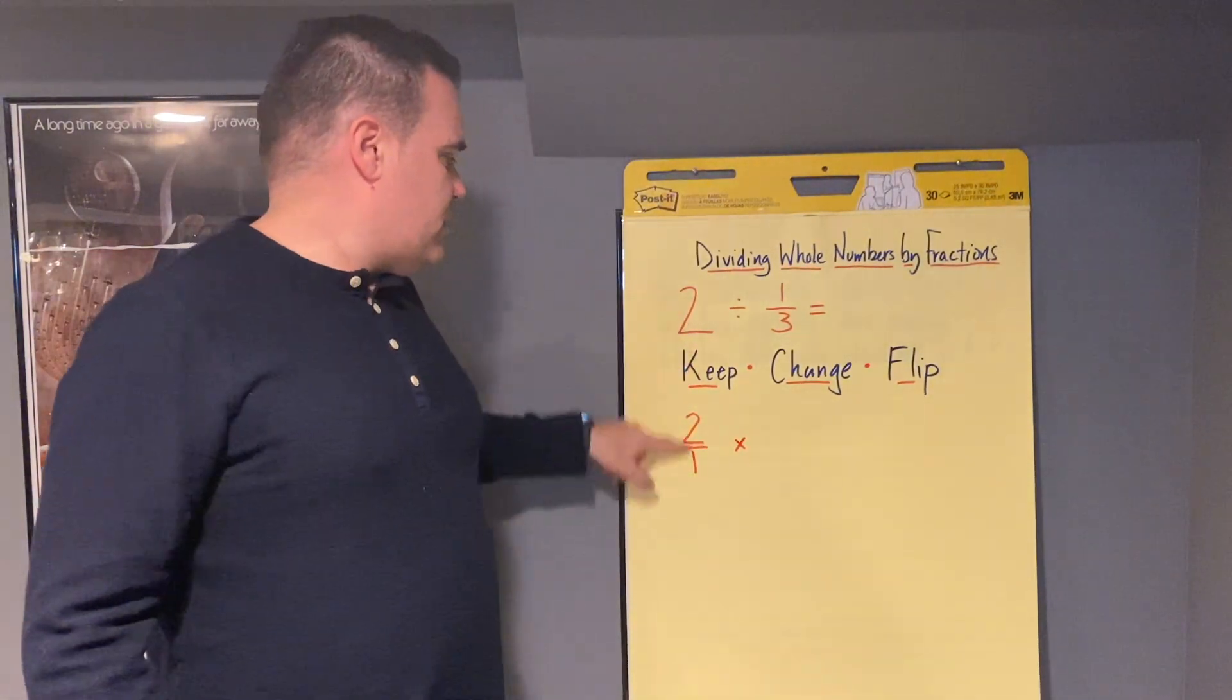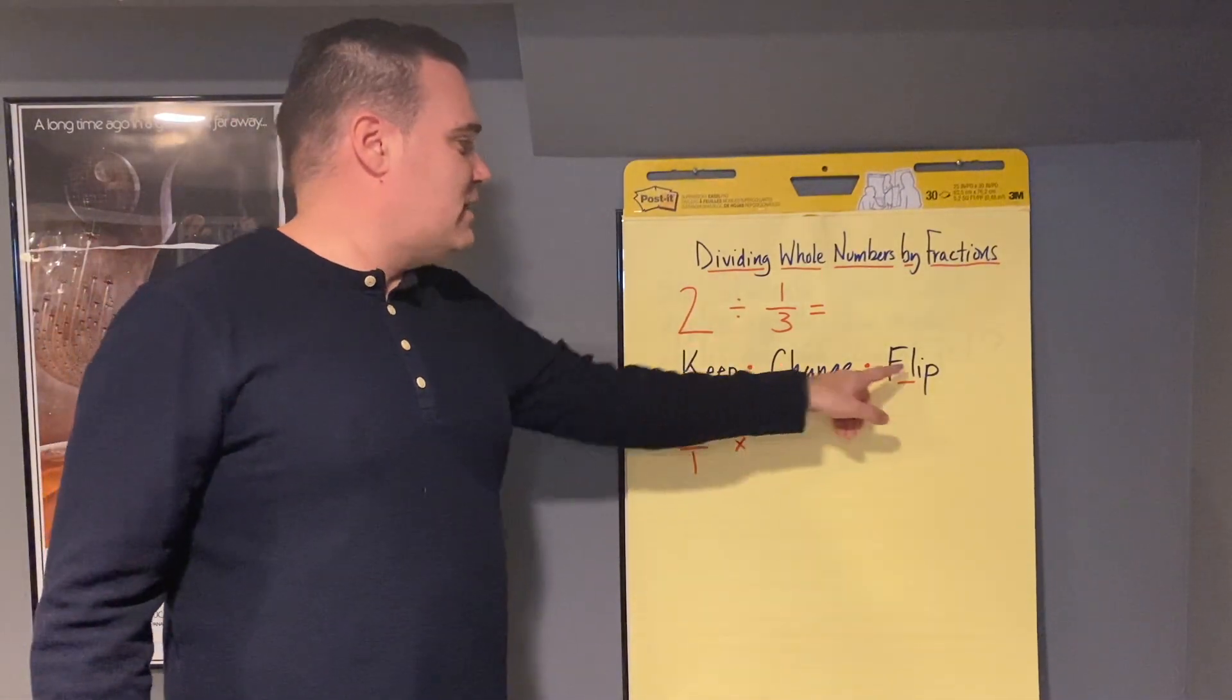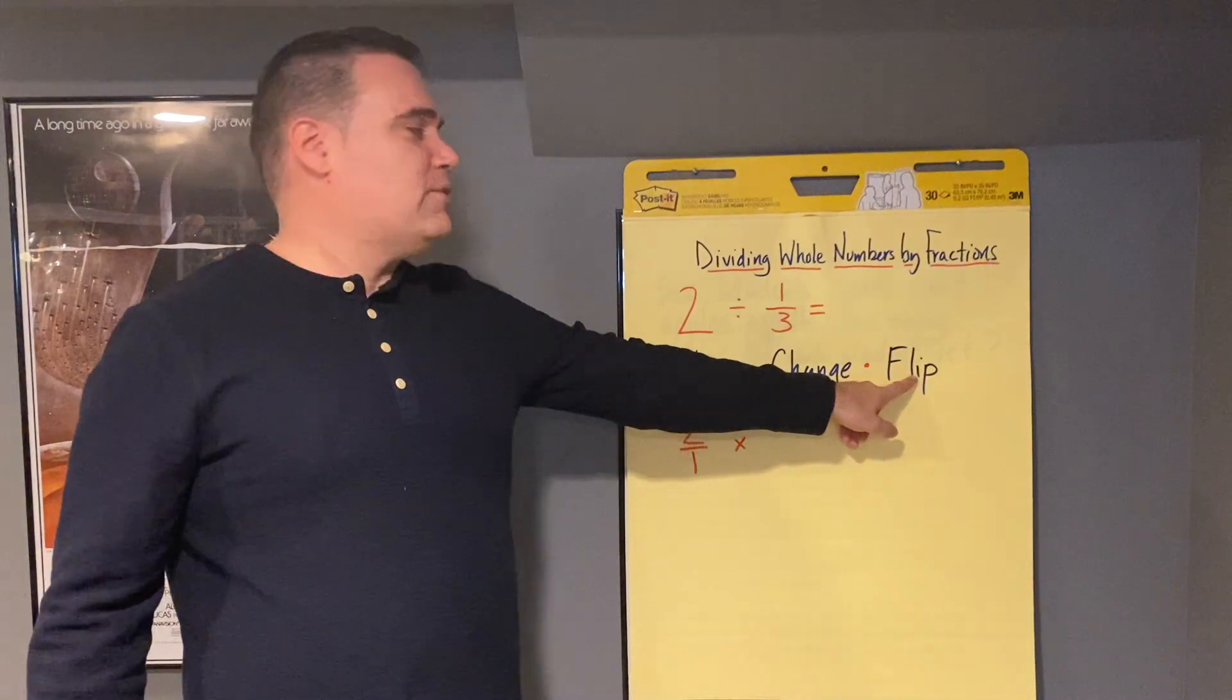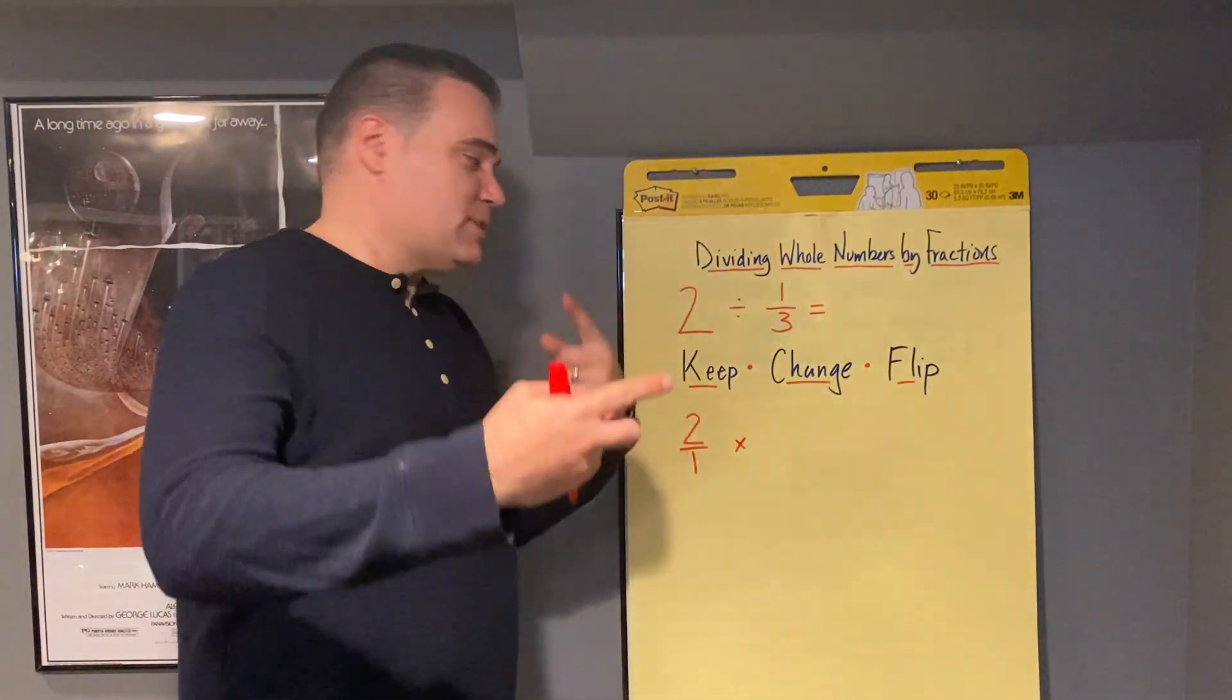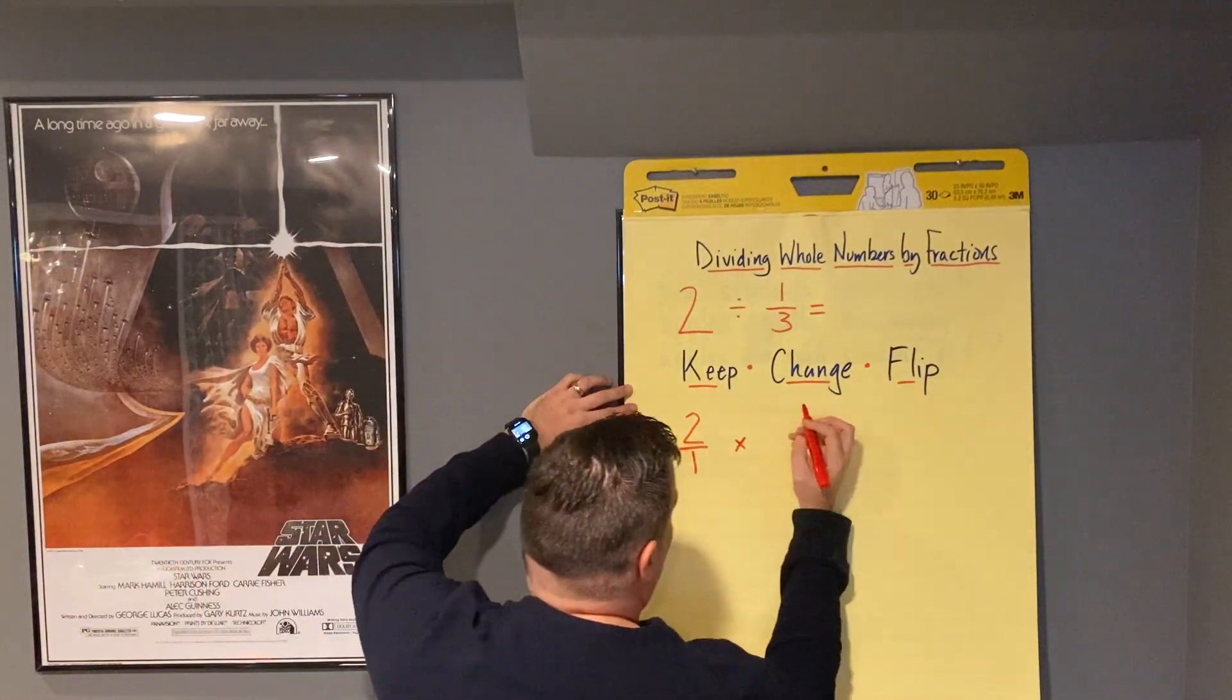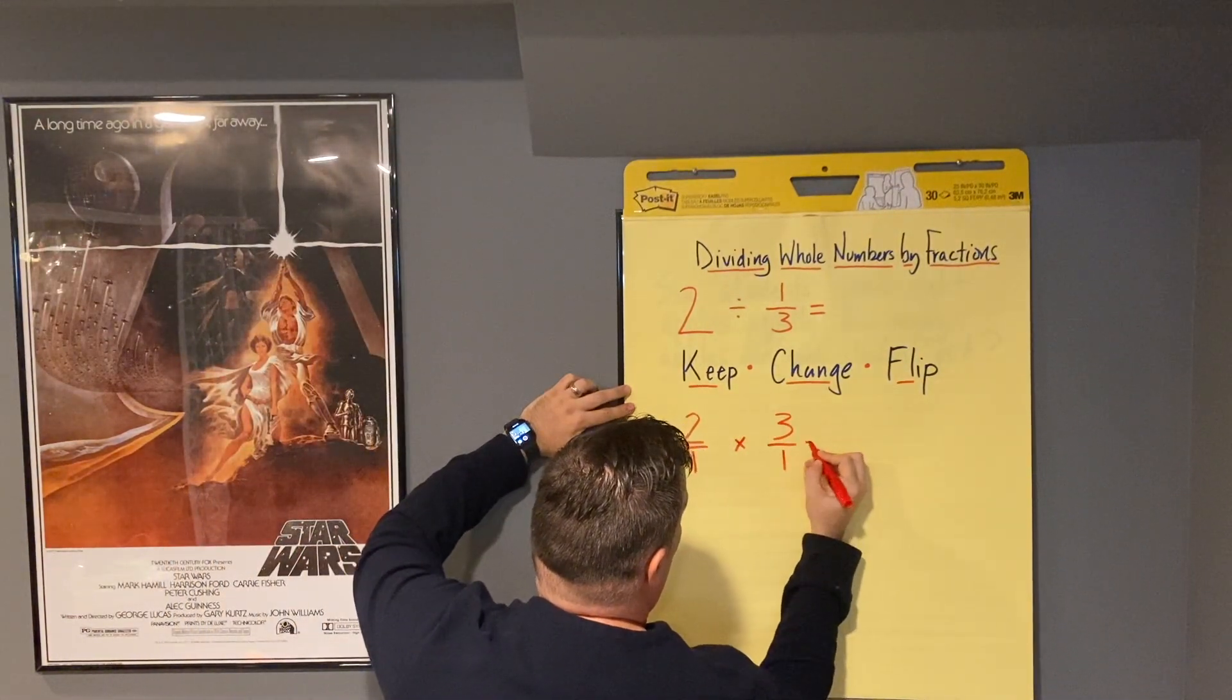So we have keep the 2, change the division to multiplication, and finally now we're going to get to, you guessed it, flip. And we're going to take 1 third, and we're going to flip it upside down, and it's going to become, instead of 1 over 3, 3 over 1.